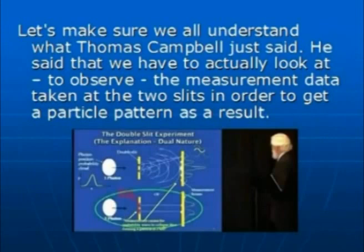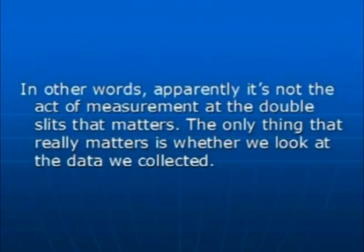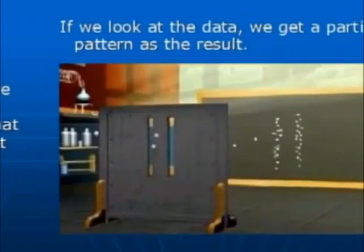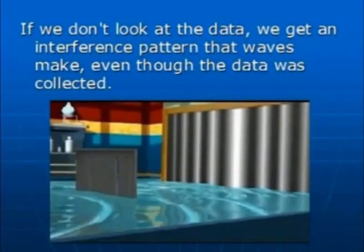Let's make sure we all understand what Thomas Campbell just said. He said that we have to actually look at, to observe, the measurement data taken at the two slits in order to get a particle pattern as a result. If we don't look at the measurement data, if we erase that data without observing it, then we get what he called a diffraction pattern, which Captain Quantum called an interference pattern in part one. In other words, apparently it's not the act of measurement at the double slit that matters. The only thing that really matters is whether we look at the data we collected. If we look at the data, we get a particle pattern as the result. If we don't look at the data, we get an interference pattern that waves make, even though the data was collected.